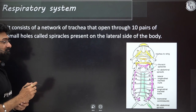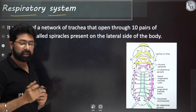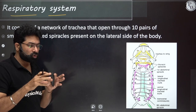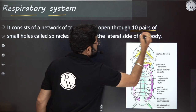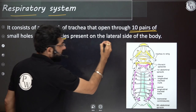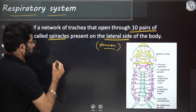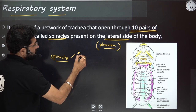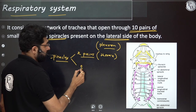Now the respiratory system. The blood circulatory system was open type. For respiration, cockroaches have 10 pairs of spiracles — small openings on the lateral side (pleuron/pleurites). Two pairs of spiracles are on the thorax and eight pairs are on the abdomen.